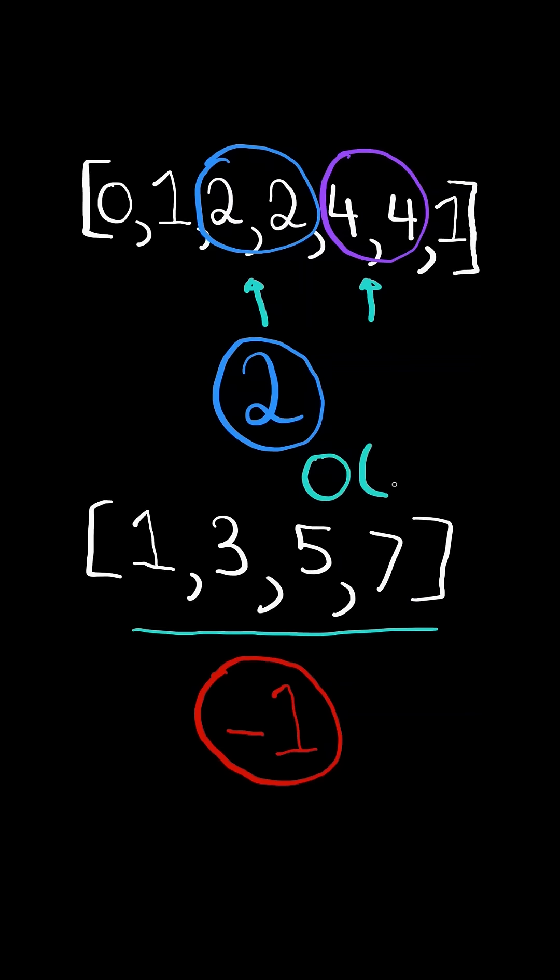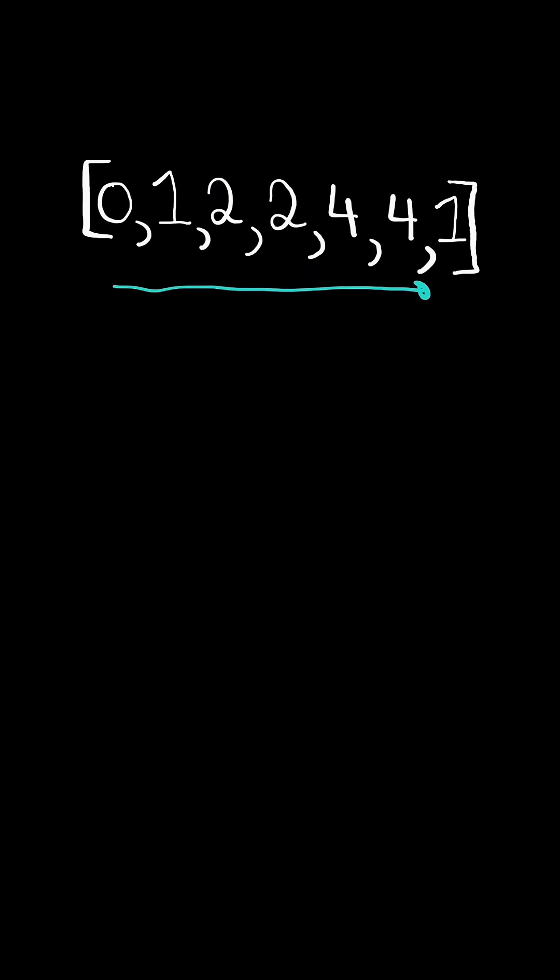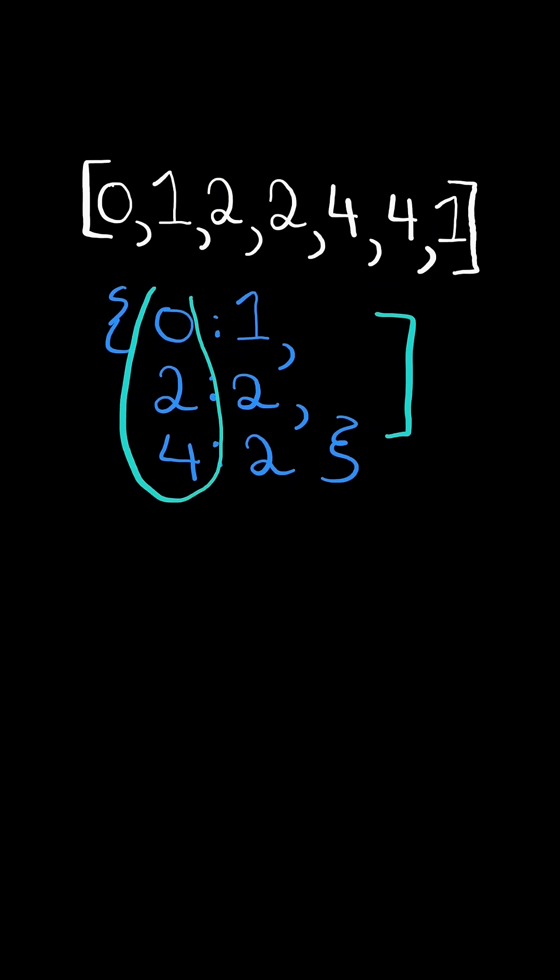We will solve this in O of n time. First, we iterate through the list and create a hash map of only the even numbers mapping to its frequency.